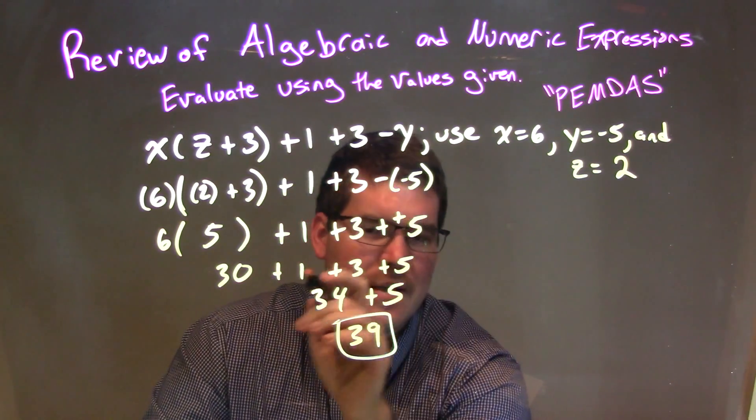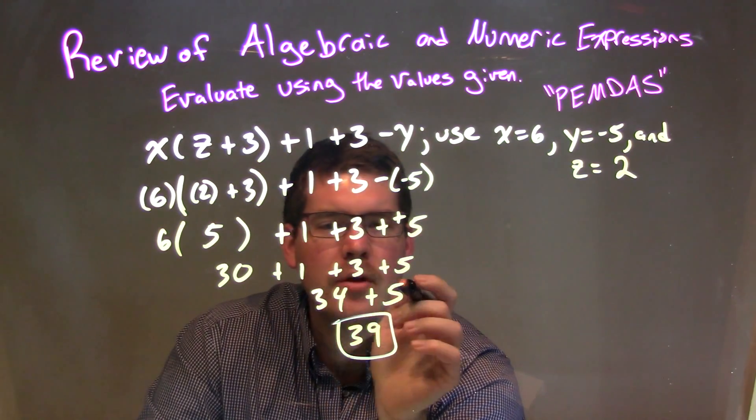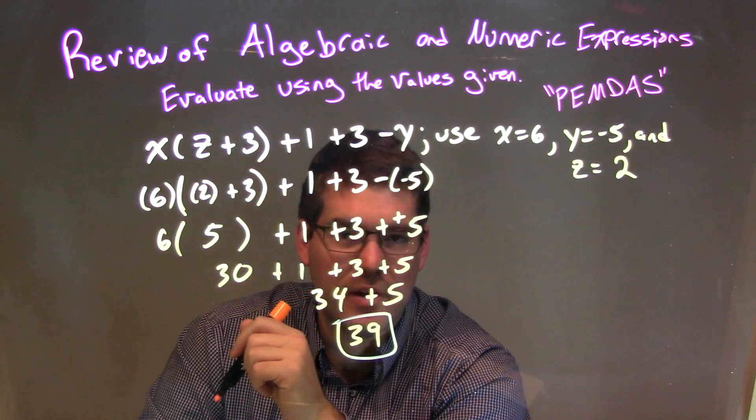And, probably, we could have done it all in one step. I've kind of broken it into two. But, 30 plus 1 plus 3 was 34. Plus 5 is 39. And, that is our final answer.